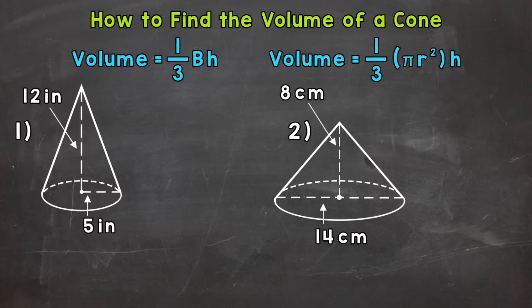Now when it comes to cones, we can use the formula 1/3 times the area of the base times the height. That's the formula at the top left of the screen. But since the base of a cone is a circle, we can input the formula for the area of a circle into our volume formula to make it more specific. So the formula to the right at the top of the screen: we have 1/3 times the area of the circular base, π r squared, times the height.